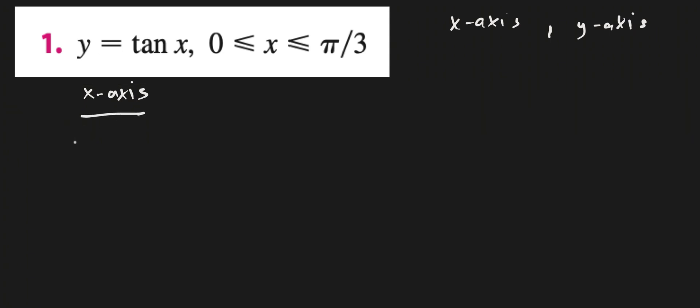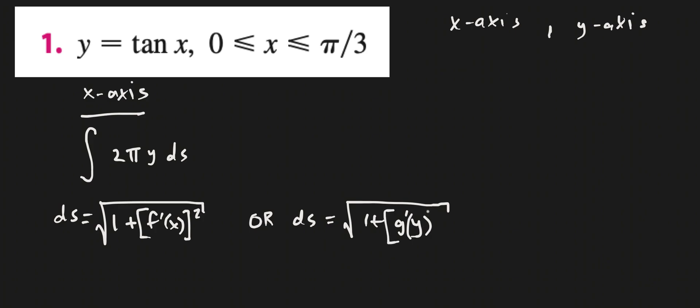So for the x-axis we have a formula. We're looking at the integration 2πy ds. Now ds is equal to two things, right? It can be equal to two things. It can be square root of 1 plus f'(x)² dx, or it can be ds is equal to root 1 plus g'(y)² dy.